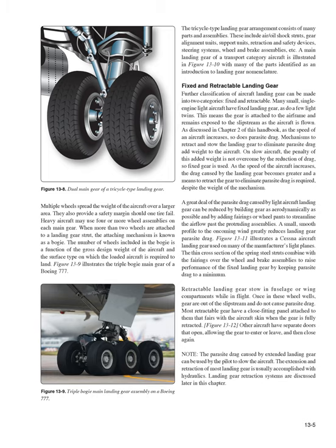Figure 13-11 illustrates Cessna aircraft landing gear used on many of the manufacturer's light planes. The thin cross section of the spring steel struts combined with fairings over the wheel and brake assemblies raises performance of the fixed landing gear by keeping parasite drag to a minimum. Retractable landing gear stows in fuselage or wing compartments while in flight. Once in these wheel wells, gear is out of the slipstream and does not cause parasite drag. Most retractable gear have a close-fitting panel that fares with the aircraft's skin when fully retracted. Other aircraft have separate doors that open, allowing the gear to enter or leave, and then close again.